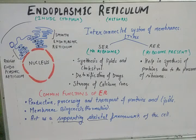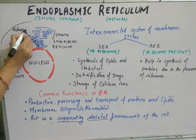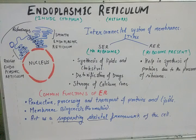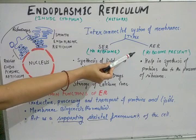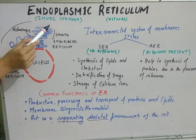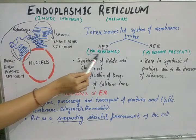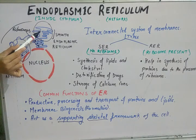Based on the presence of ribosomes on the surface of the endoplasmic reticulum, it is divided into two types. As you can see in the structure, the black dots are ribosomes — the protein factories responsible for making proteins in the cell. The two types are smooth endoplasmic reticulum and rough endoplasmic reticulum. When there is no ribosome on the surface, the ER appears smooth.